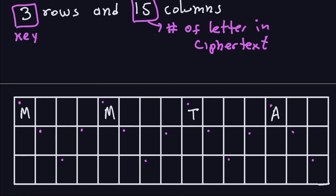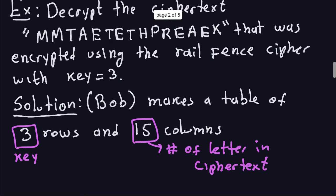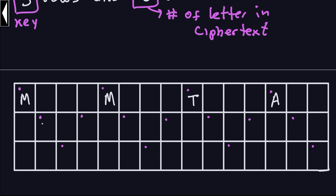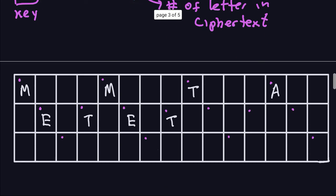For the second row, he counts the positions and finds there are seven letters. So after the letter A, he takes the next seven letters from the cipher text: E, T, E, T, H, P, R. He places E, T, E, T first, then the remaining three letters H, P, R. So that fills in the second row with all seven letters.